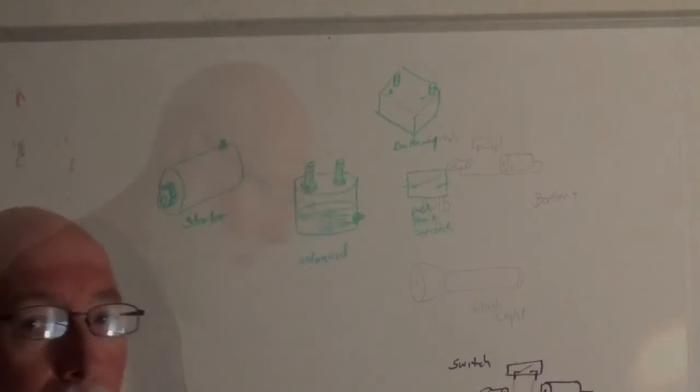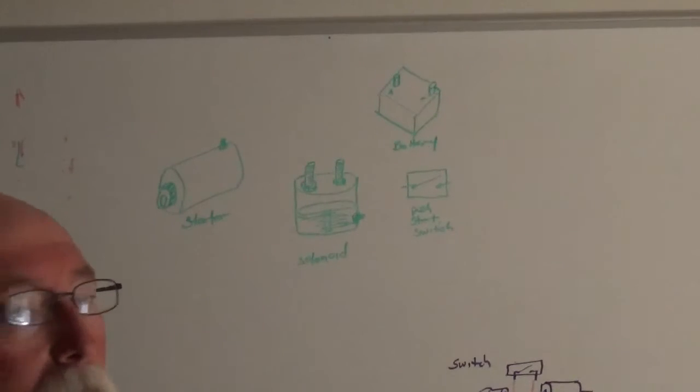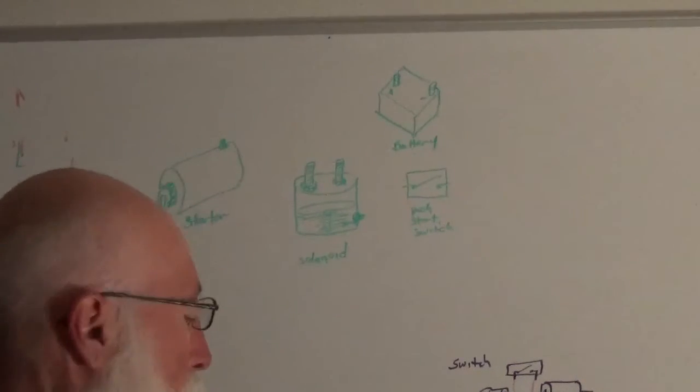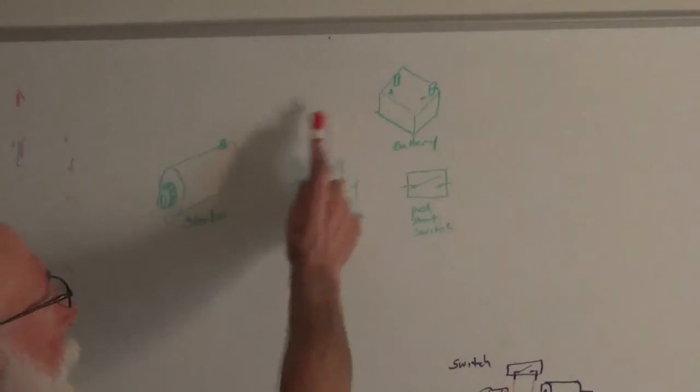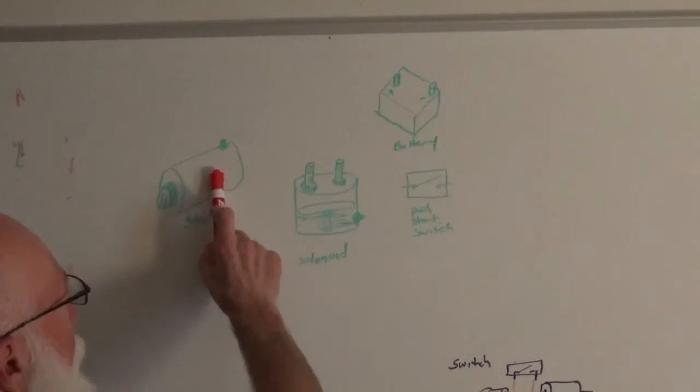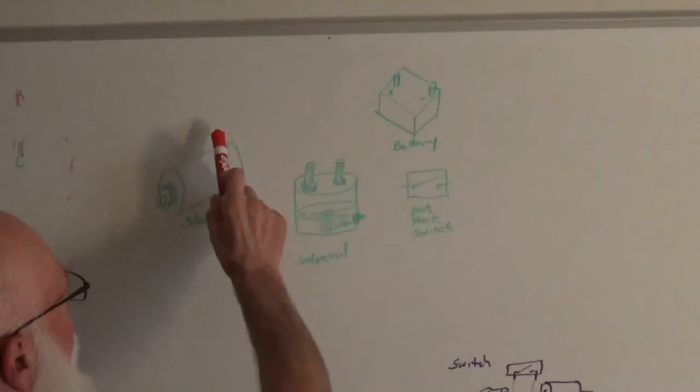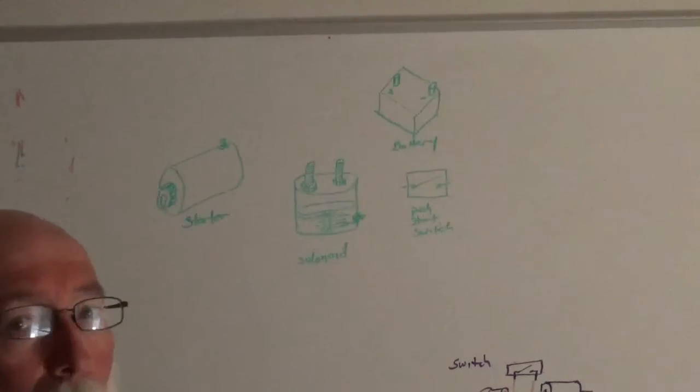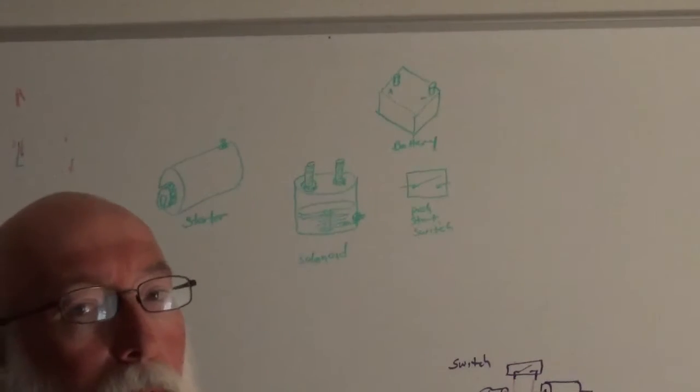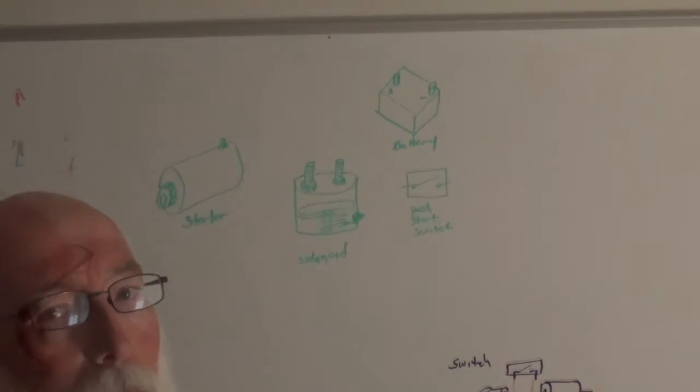Now, let's take that same principle and put it towards your starter circuit. Ultimately, there's only two things you need: you need your battery and your starter motor. If you put power from your positive to the lead on the starter, and you complete that ground circuit back here, that starter motor will actually spin. Only problem with that is we don't want the starter on all the time.